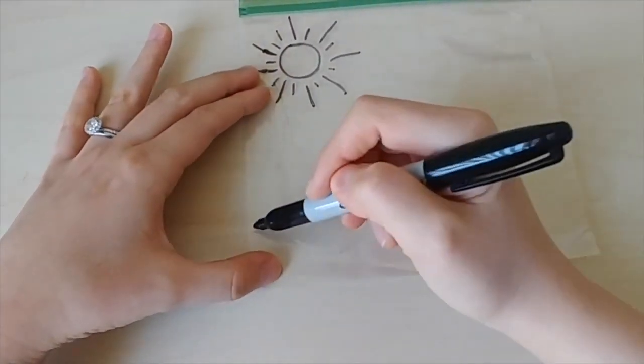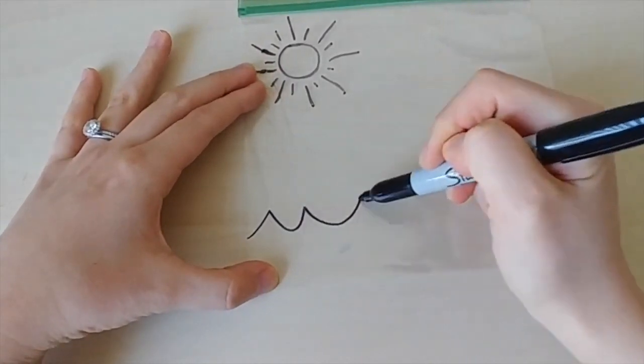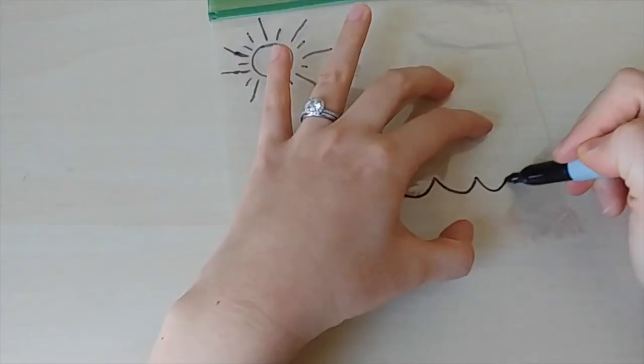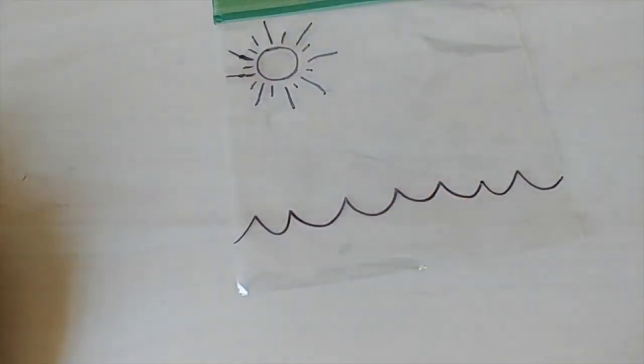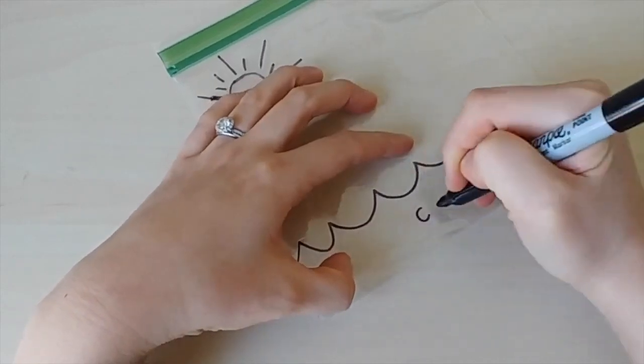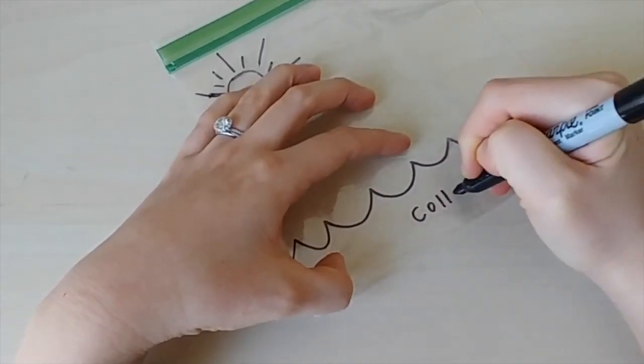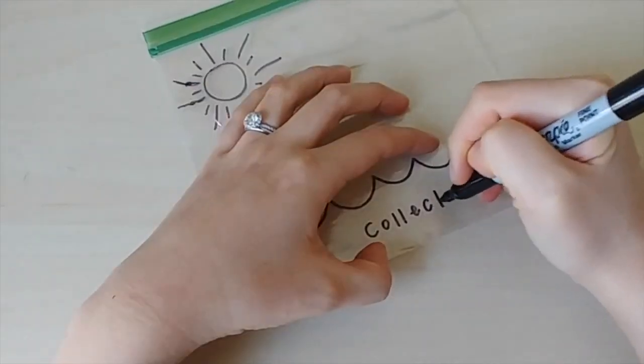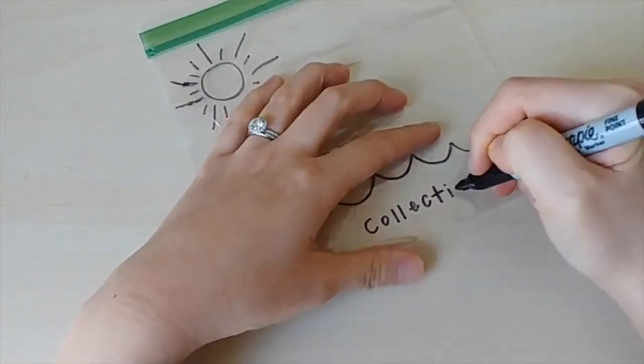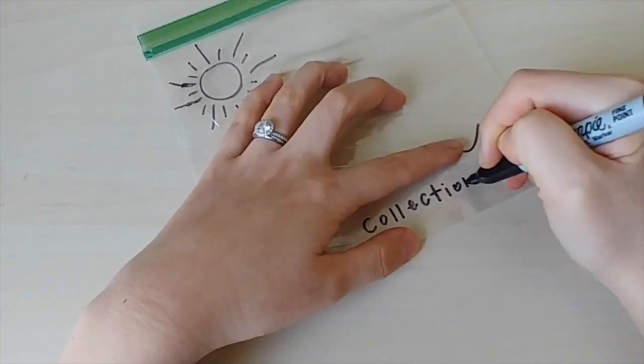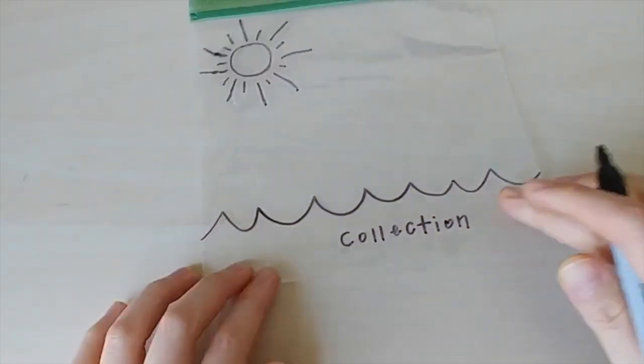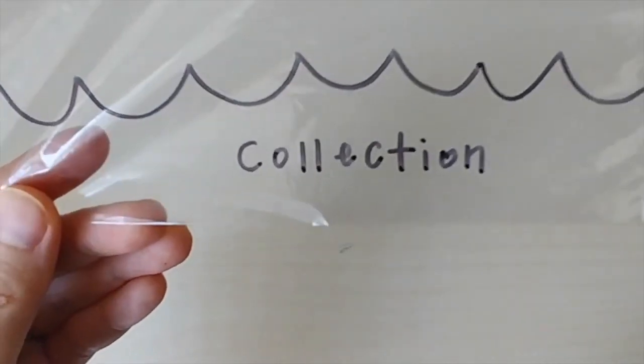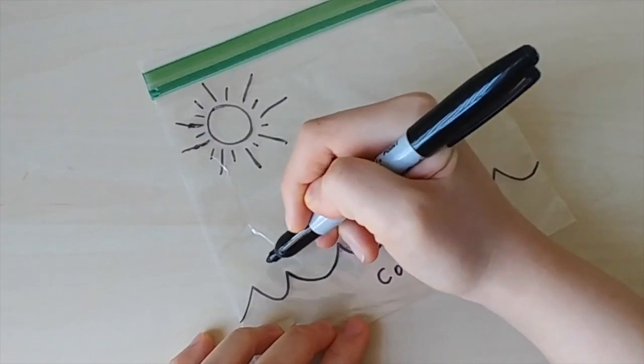Next, about three centimeters from the bottom of the bag, draw some waves to represent water that is being collected on earth and we'll label this collection, which is spelled C-O-L-L-E-C-T-I-O-N. This represents all of the water that is collected on earth in oceans, lakes, rivers, and many more locations.